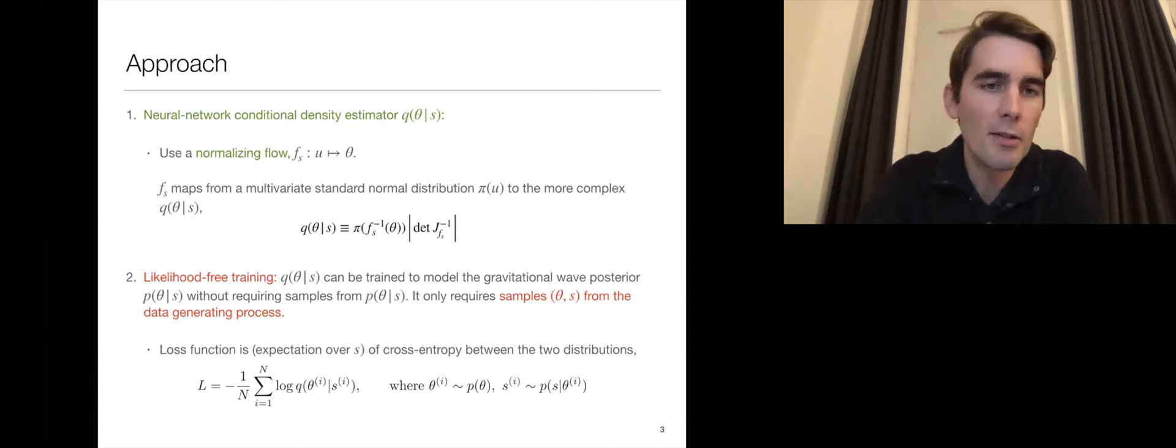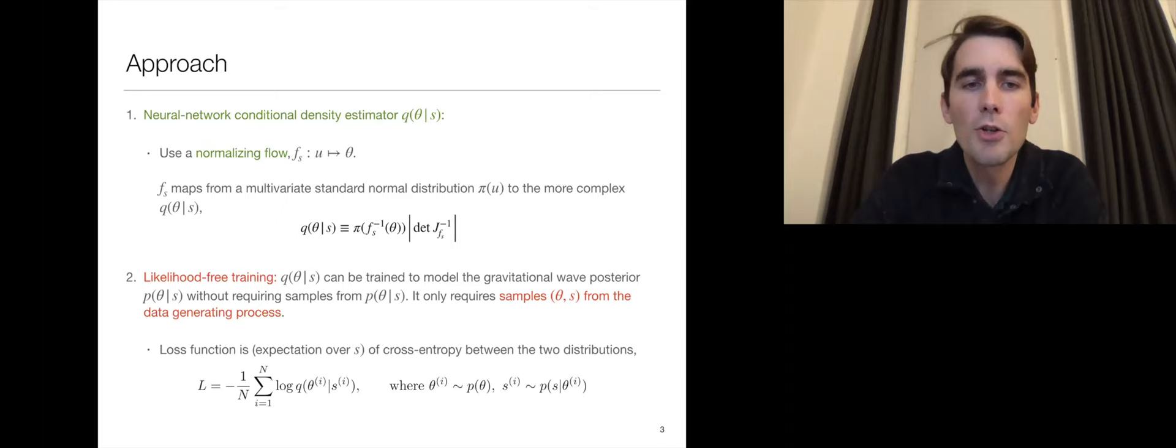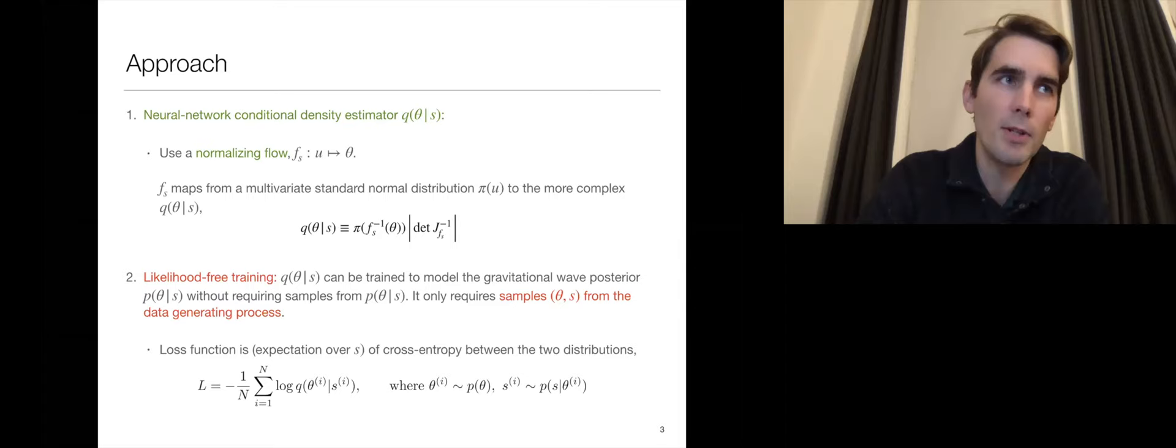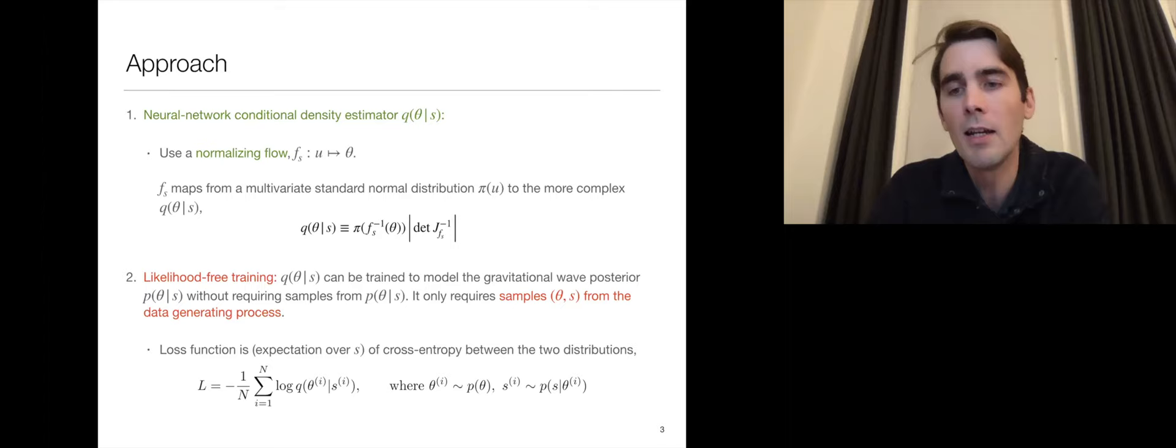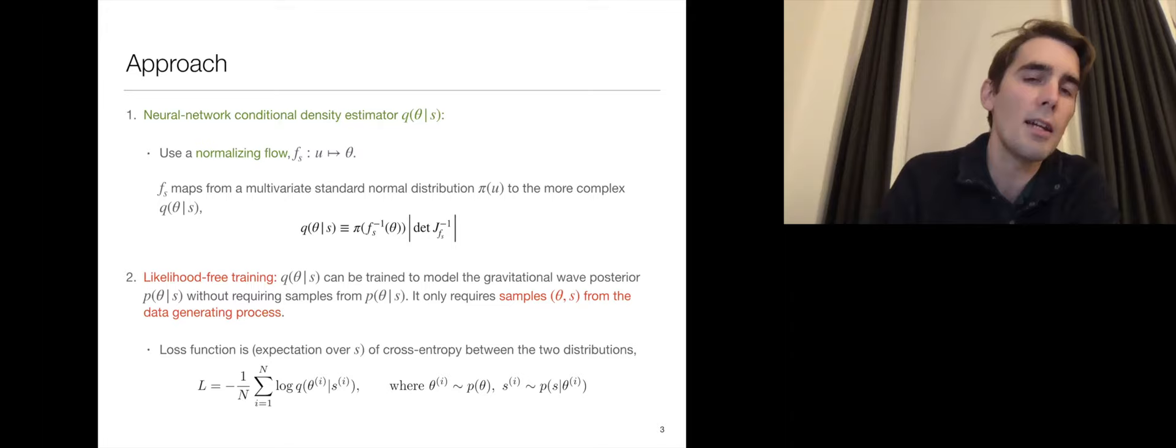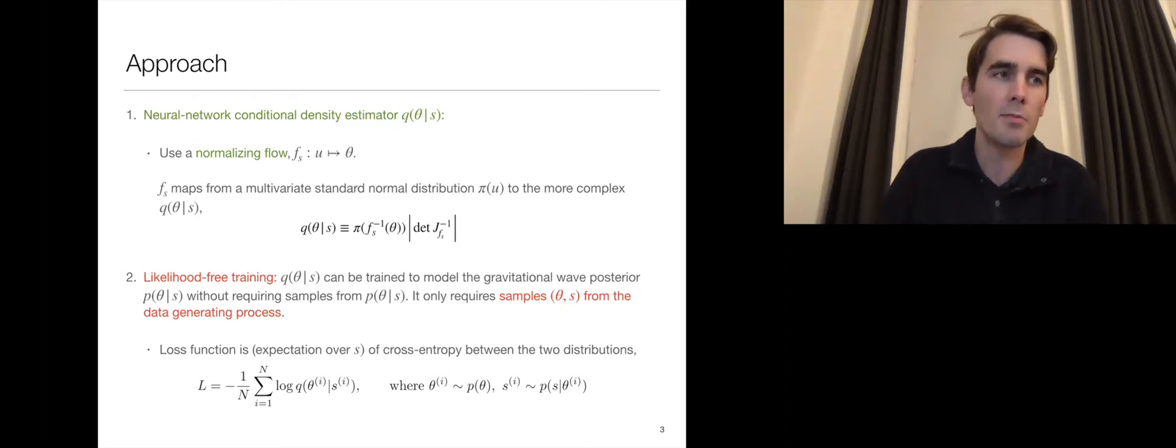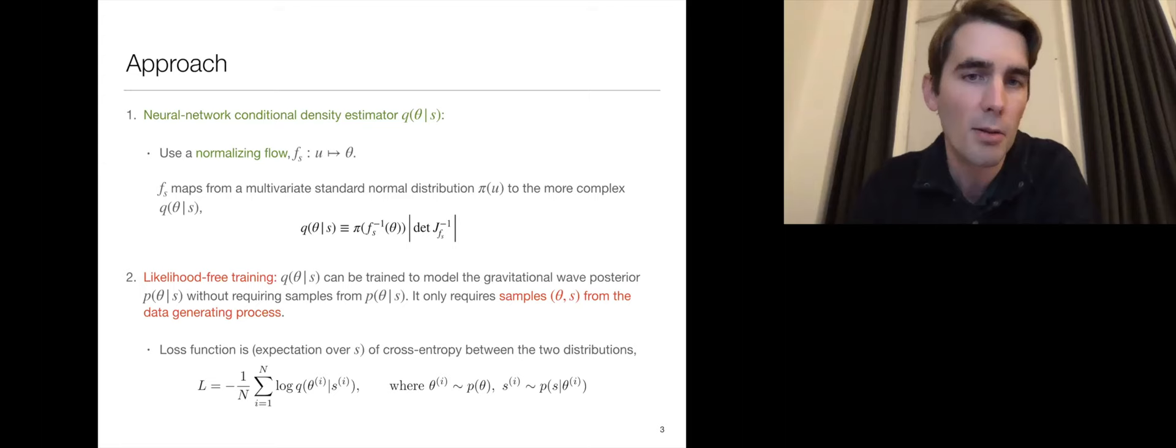The second aspect of this work is we're using likelihood-free or simulation-based inference, which means that we can train Q to model the gravitational wave posterior without actually requiring any samples from the posterior for training. Instead, you just need to be able to simulate data. This is very good because posterior samples, as I said on the first slide, are extremely expensive to come by. Moreover, you don't need to know what the likelihood is. You don't have to have an analytic likelihood function, which means you can apply this method even in cases with non-Gaussian noise. It does give you an avenue to get around idealizations about noise with present methods.